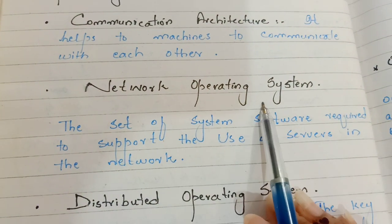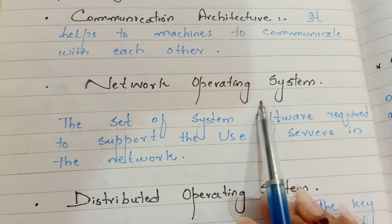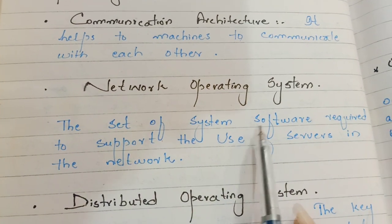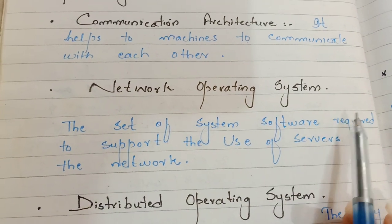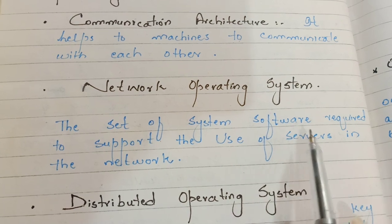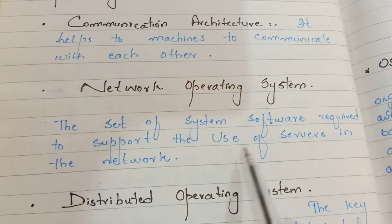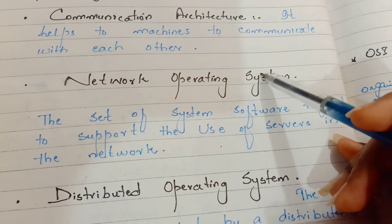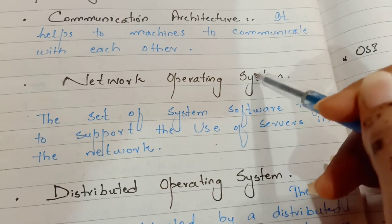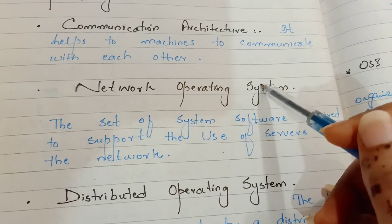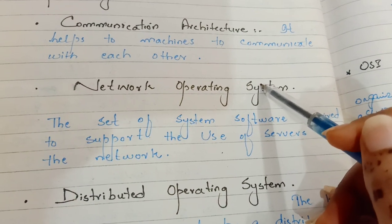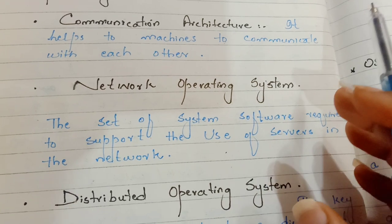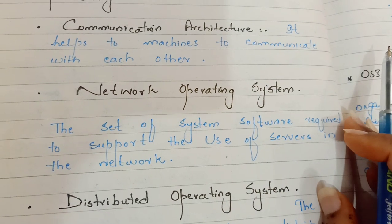The second requirement is a network operating system, which means the set of system software required to support the use of servers in the network. You have a network operating system so that you can use your servers effectively.